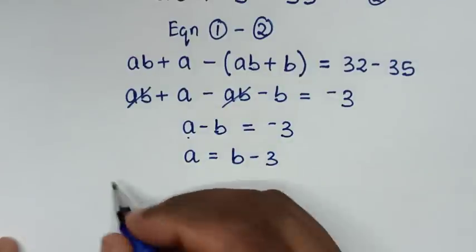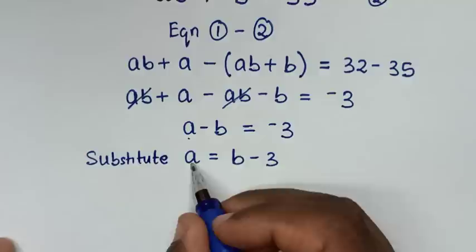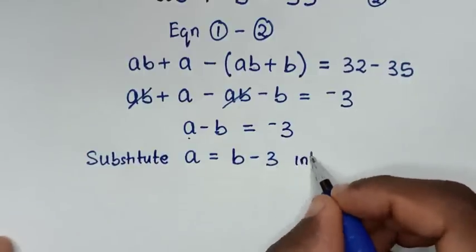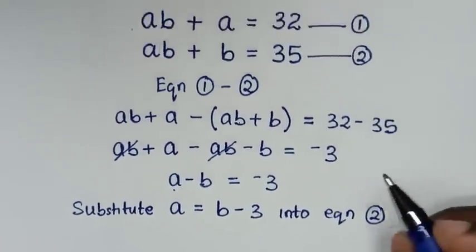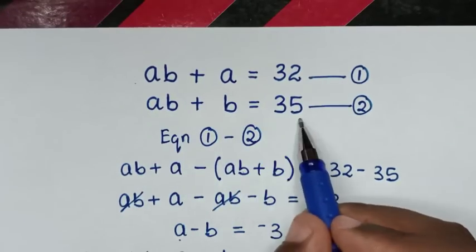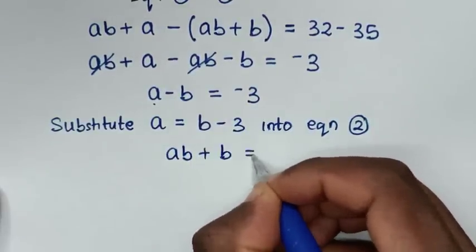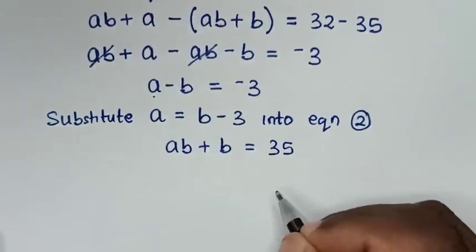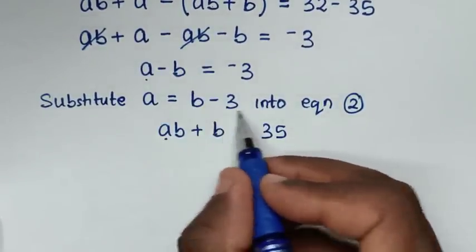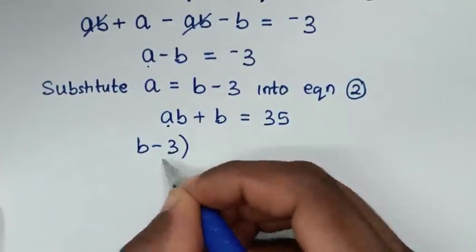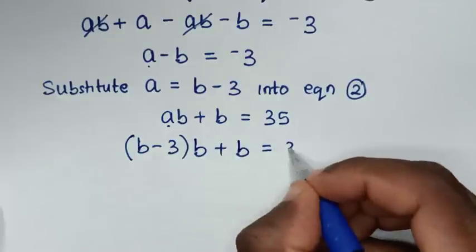We'll substitute the equation A equals B minus 3 into equation 2. Equation 2 is AB plus B equals 35. Replacing A with B minus 3, we get (B minus 3) times B, plus B, equals 35.